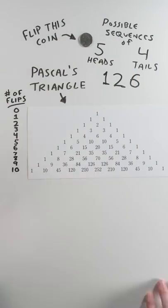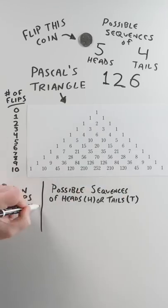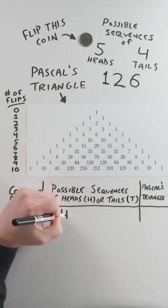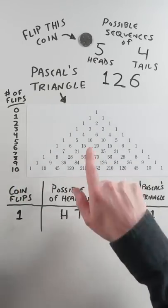Consider each row to be the number of flips. Top row is 0, next row is 1 coin flip with 2 possible outcomes, head and tail.